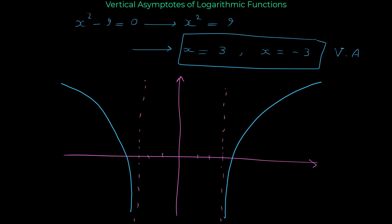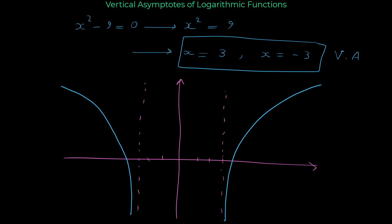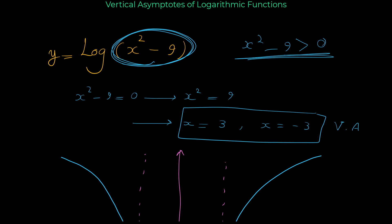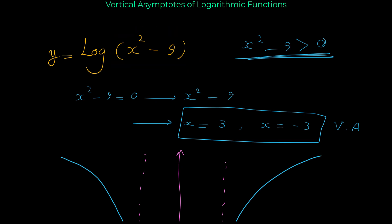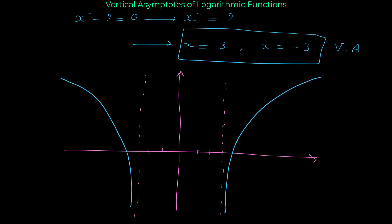So let's review the process: to find the vertical asymptotes of logarithmic functions, simply set the expression inside the log equal to zero, solve for x, and you have the vertical asymptotes. I hope by watching this video you have learned how to find the vertical asymptotes of logarithmic functions.